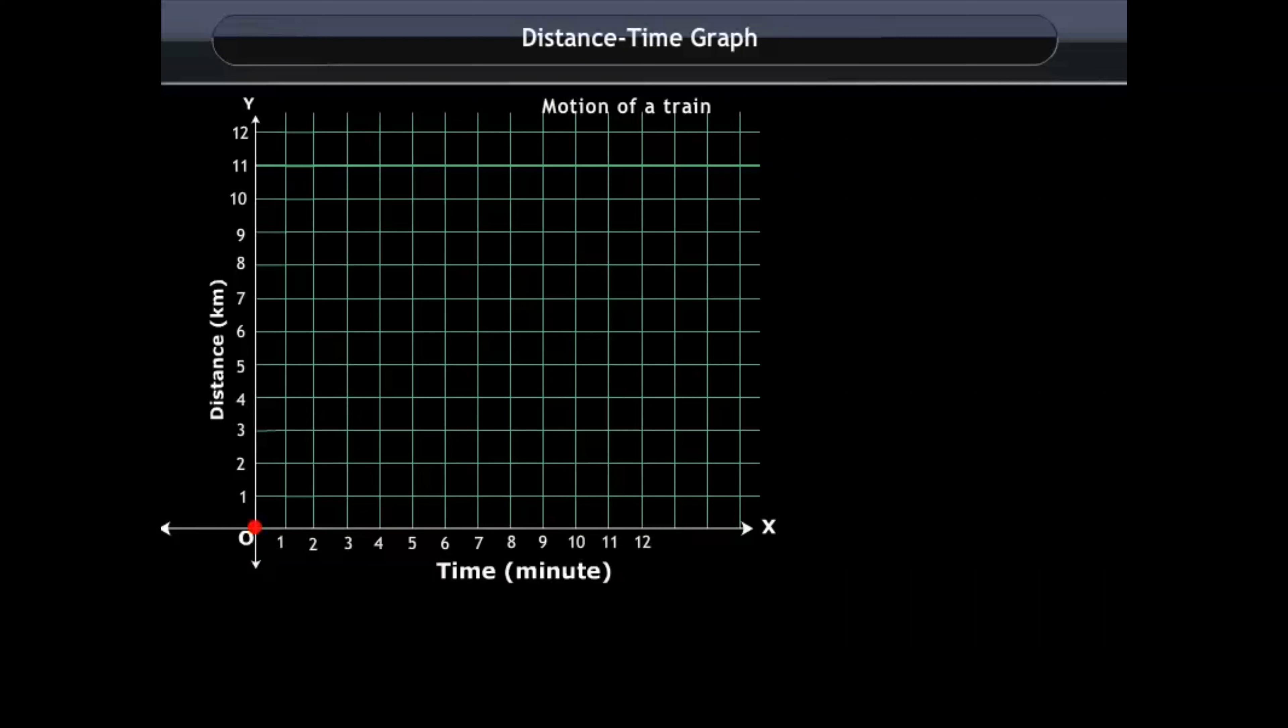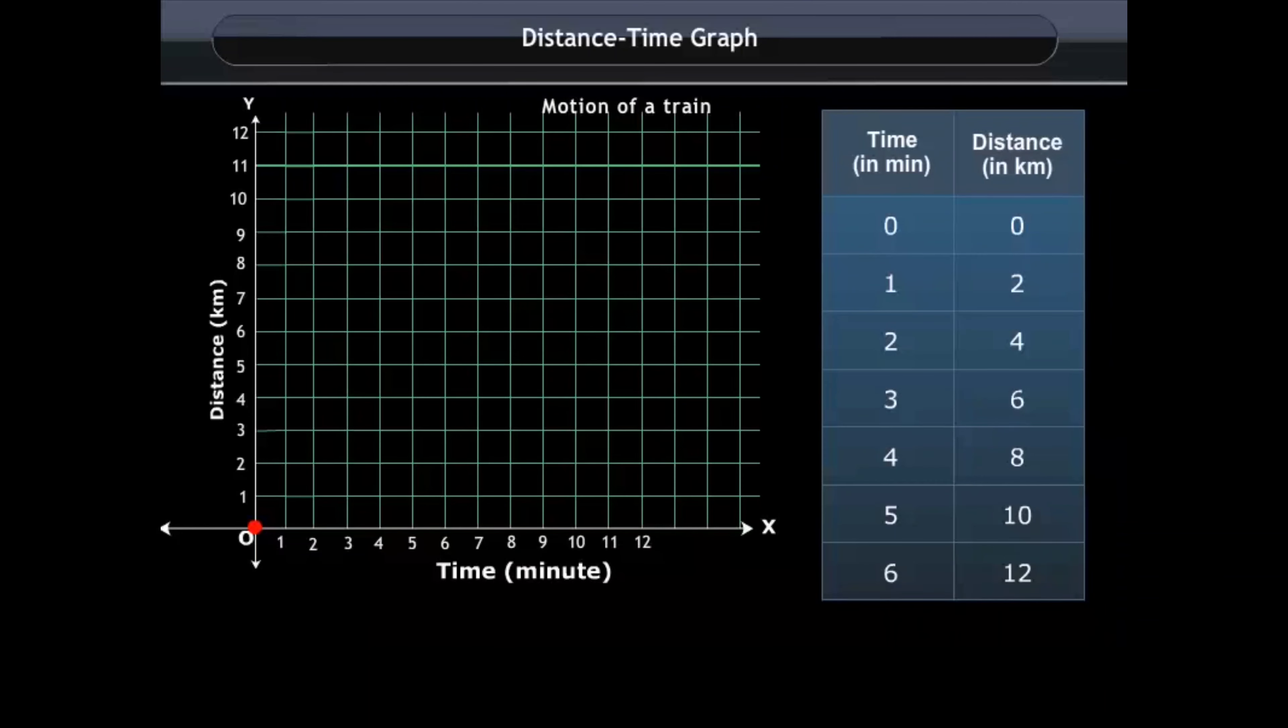In the first row, the body covers 0 km in 0 minutes. A point on the graph represents it. This point corresponds to the origin of the graph.